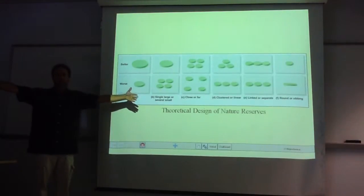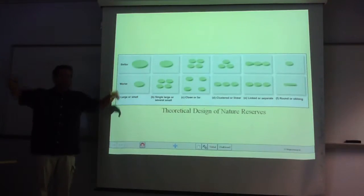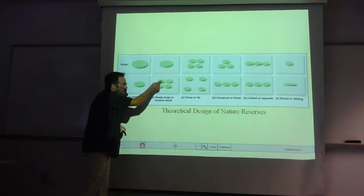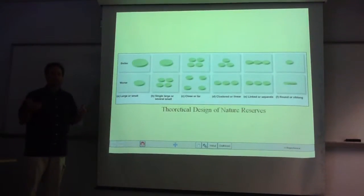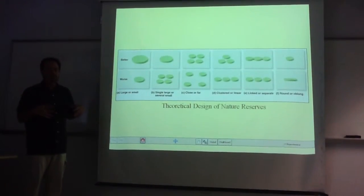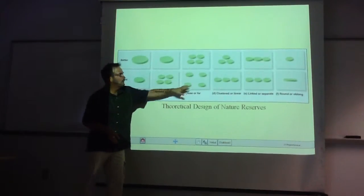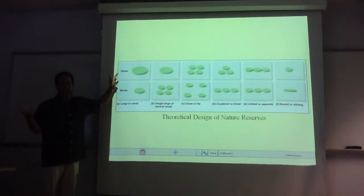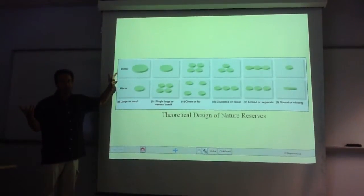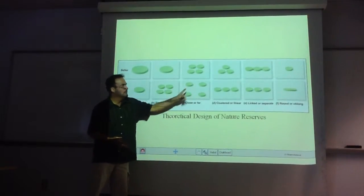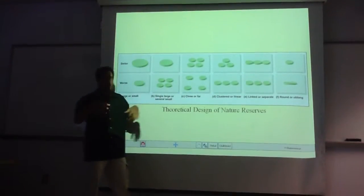One big one is better than a bunch of little ones because some animals have large ranges — you can't take an animal and put it into a tiny fragment. One large area is much better than a bunch of little areas. If you're forced to have a bunch of little areas, it's better if they're closer together, because if animals are going to hop between them they can hop a shorter distance, giving more possibility for migration.